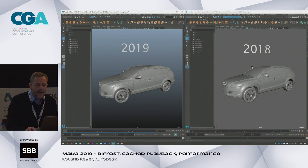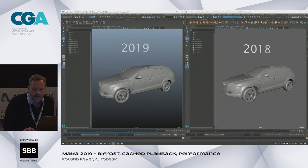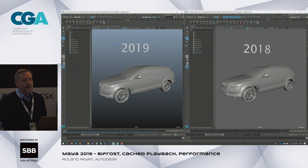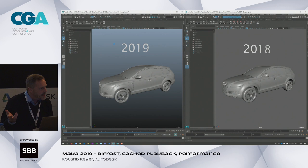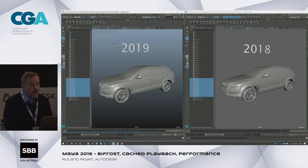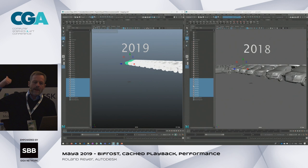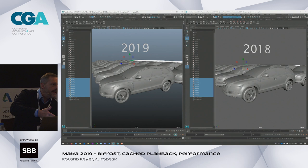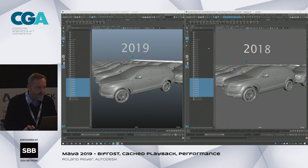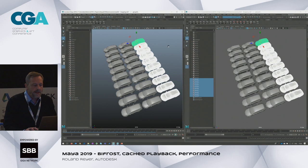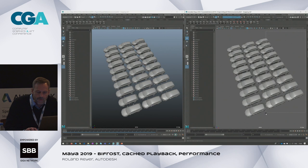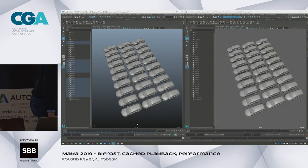Another impressive thing in Maya 2019 versus 2018: I have a shelf button in both softwares that duplicates the car 30 times, so we end up with 30 cars in the scene. It takes a while in both softwares to make all these duplicates. Look at the drawing process in Maya 2018 versus Maya 2019 — there's already a difference in how it handles and transfers all this geometry. Then I make a selection of about half the cars in 2018, and the same in 2019 — look at the selection performance. Even though I did 2019 second, it's already done while 2018 is still not there.